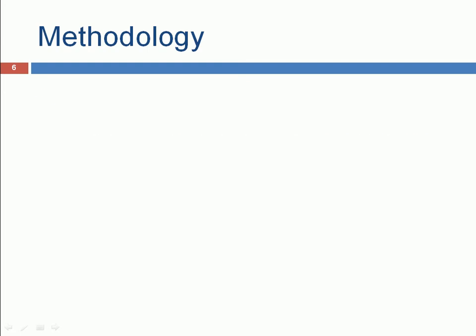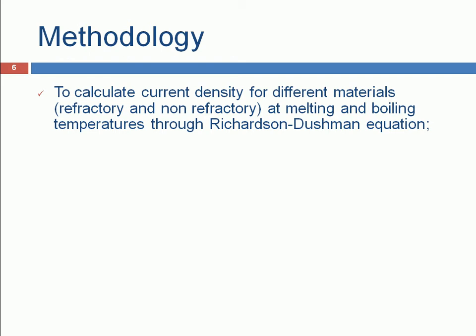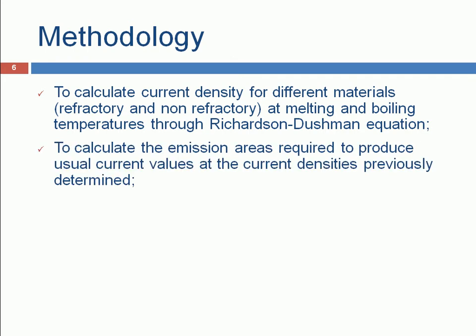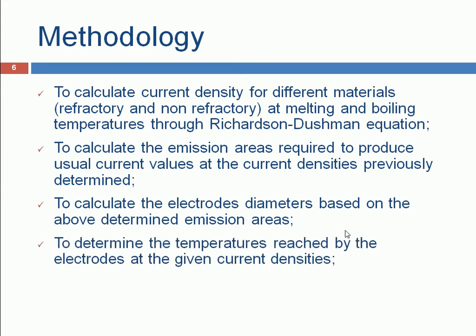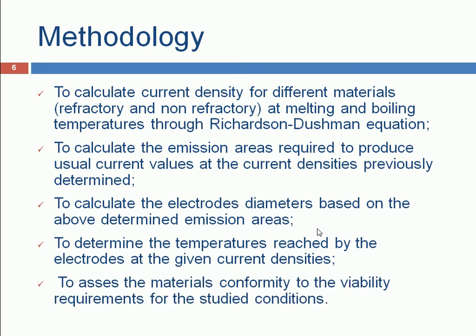In our methodology, first we calculated the current density for different materials at melting and boiling temperatures through Richardson-Dushman equation. Then we calculated the emission areas required to produce usual current values at the current densities previously determined. Then we calculated the electrode diameter based on the above determined emission areas. Then we determined the temperatures reached by these electrodes and assessed the materials conformity to the viability requirements for the studied conditions.